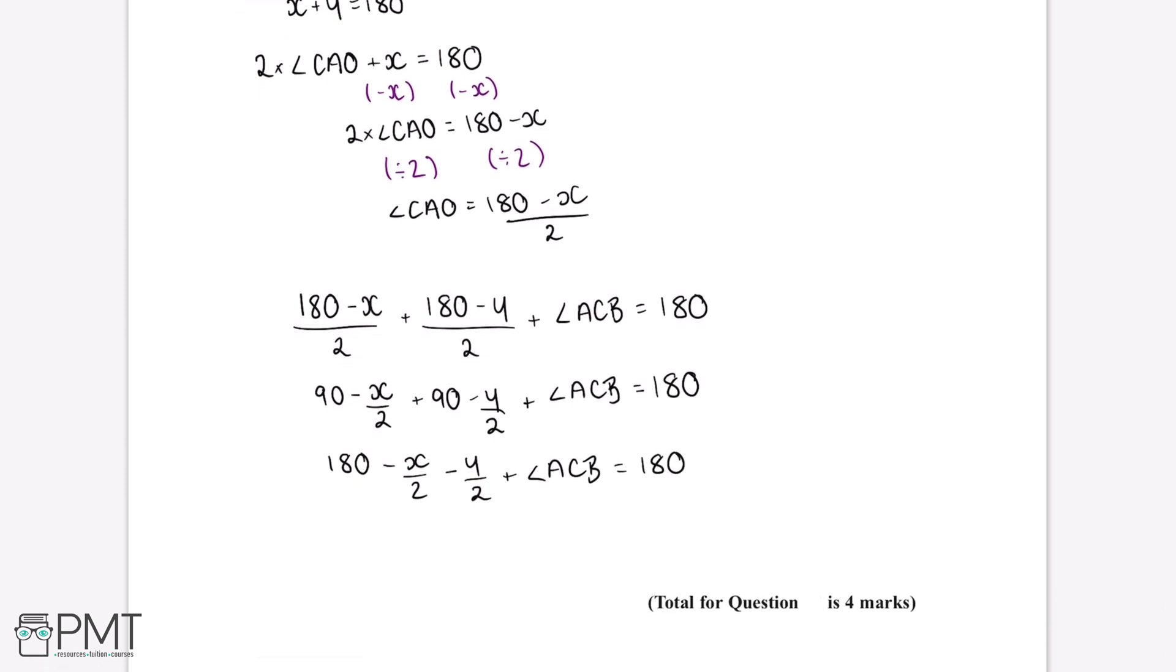The next thing we can do is factor out negative a half from this negative X over 2 minus Y over 2. This gives us 180 minus a half multiplied by X plus Y plus angle ACB is equal to 180 degrees.